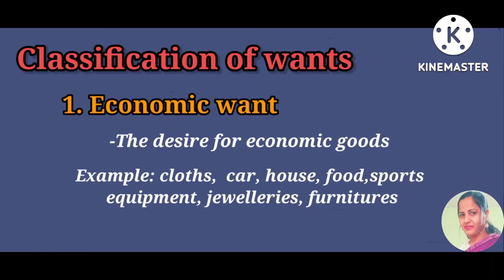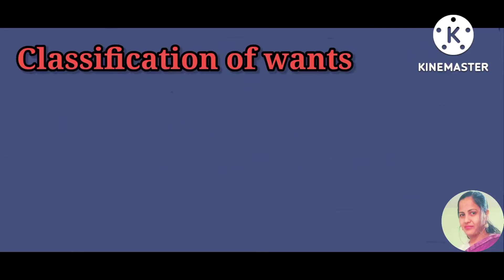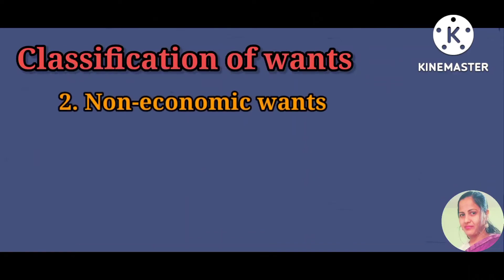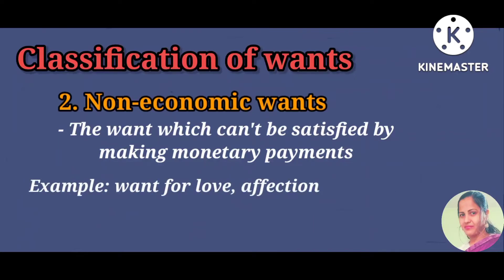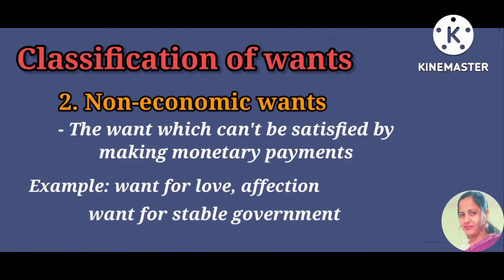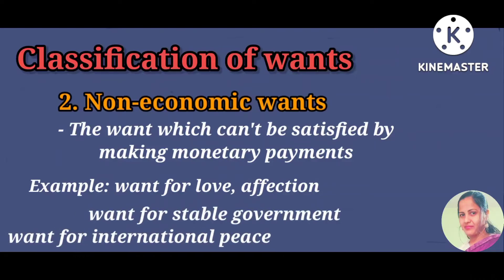Next, non-economic wants. The wants which cannot be satisfied by making monetary payments are known as non-economic wants — that is, the desire for something that can be obtained without spending money. For example, we want love and affection from our parents, relatives, neighbors, and friends. We want a stable government, international peace, and universal brotherhood. To satisfy these wants there is no need to spend money.